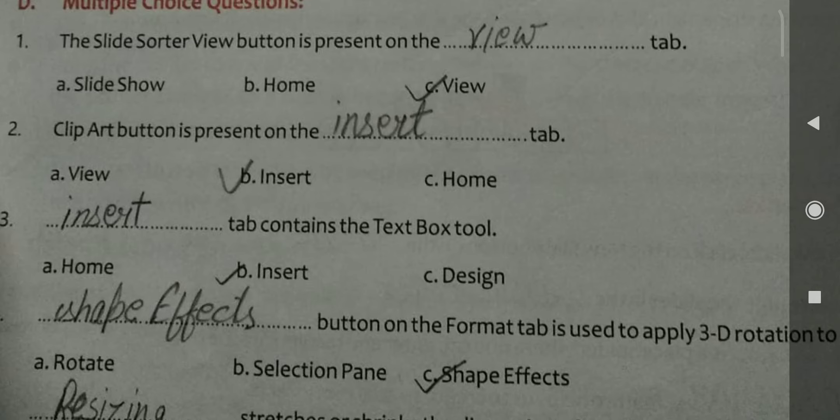Question number 4. Dash button on the format tab is used to apply 3D rotation to the shape. Rotation, selection pane, shape effect. It is shape effects.